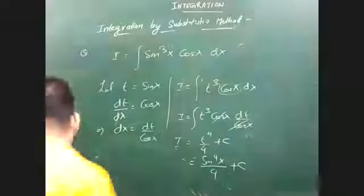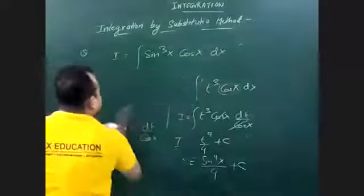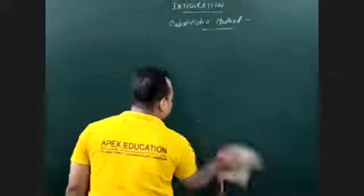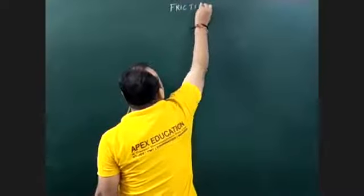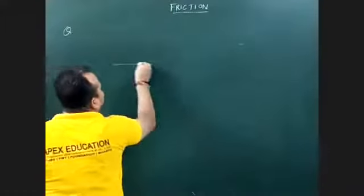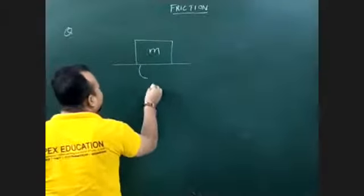Let's look at the next question in friction. We will do more questions. You have two or three formulae from the question. The question is: a block with mass m is on a surface, and mu, the coefficient of static friction, is given.